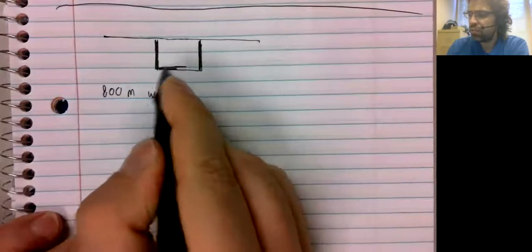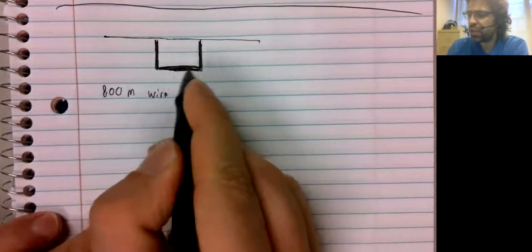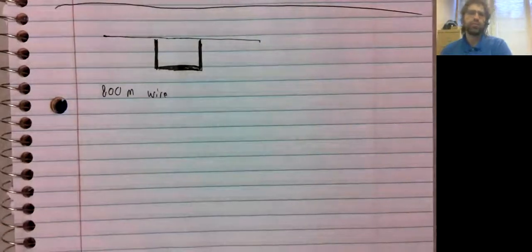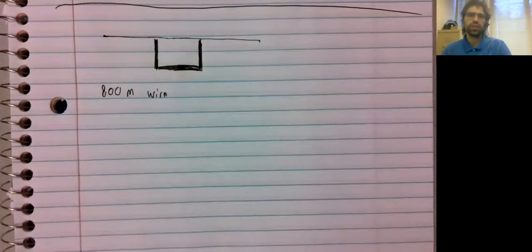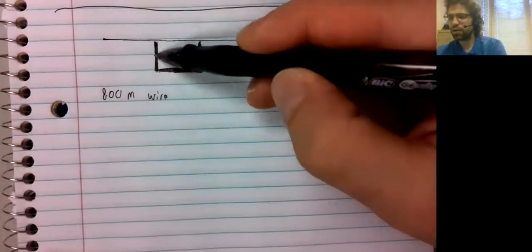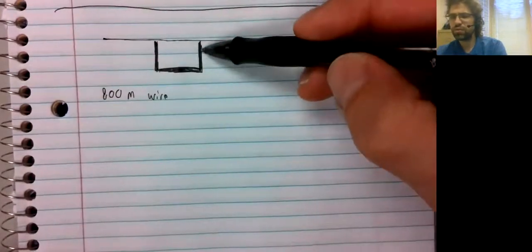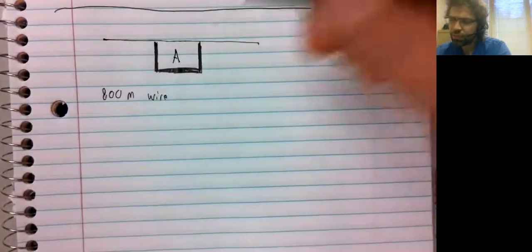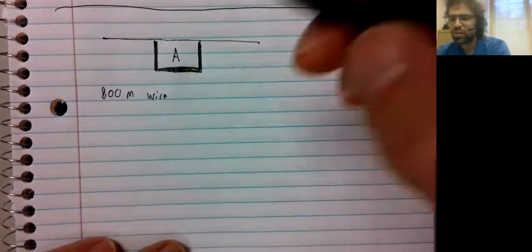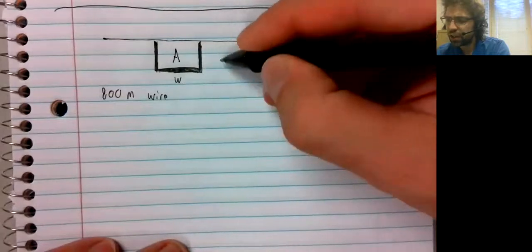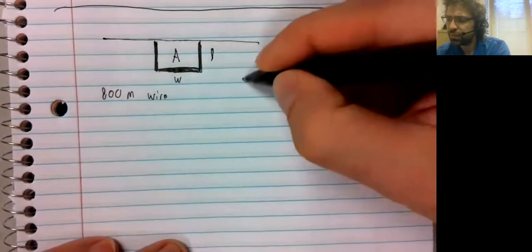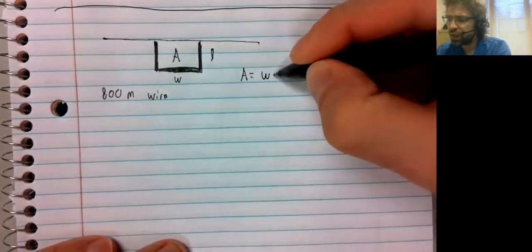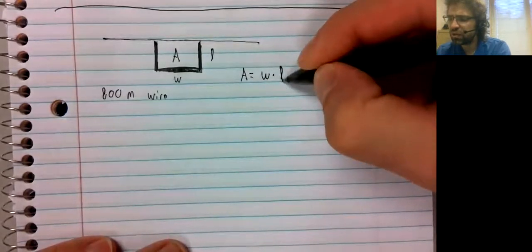This enclosure you're creating has a river as one side, so the wire is only being used here. And you're trying to maximize the area. And the area is width times length.